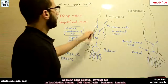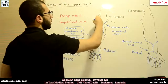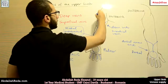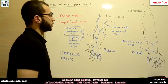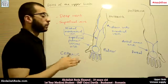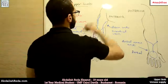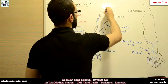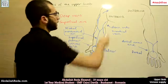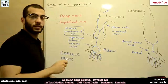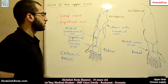The cephalic vein courses into the deltoid groove, then penetrates a fascia called the clavipectoral fascia, and continues until it reaches the axillary vein at the axillary region — the vein that accompanies the axillary artery — and drains into it.